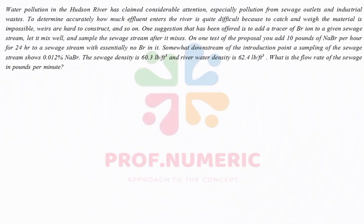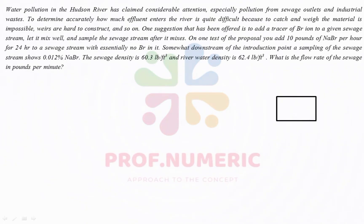In the problem statement we are given a system of the mixture. Here is a stream of sewage coming into the system, which contains negligible bromate ions — we are using bromate as a tracer. We are also given that we have 10 pounds of sodium bromate being mixed as a tracer so that we can find the flow rate of the sewage in the river. Let us sketch the problem figure.